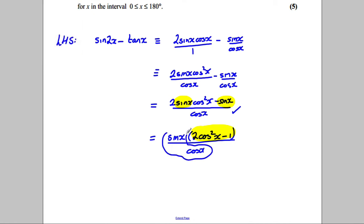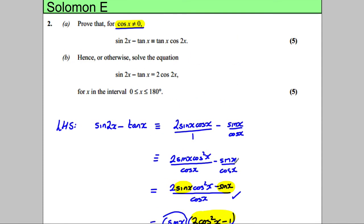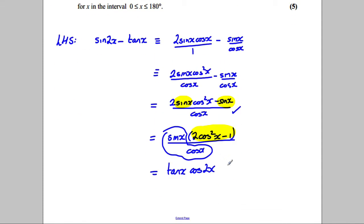And also, sine x divided by cos x is equal to tan x. So, this is tan x cos 2x. And I think that's what we wanted to show. It is and that is equal to the right-hand side.